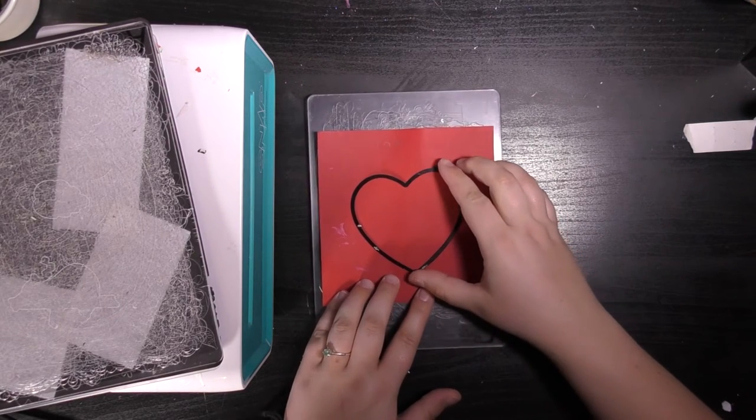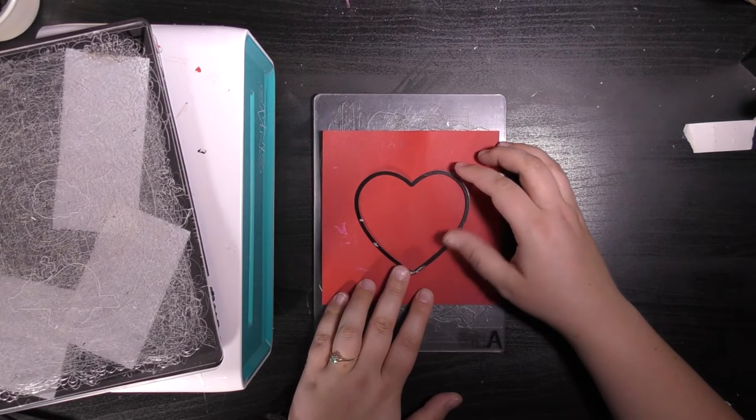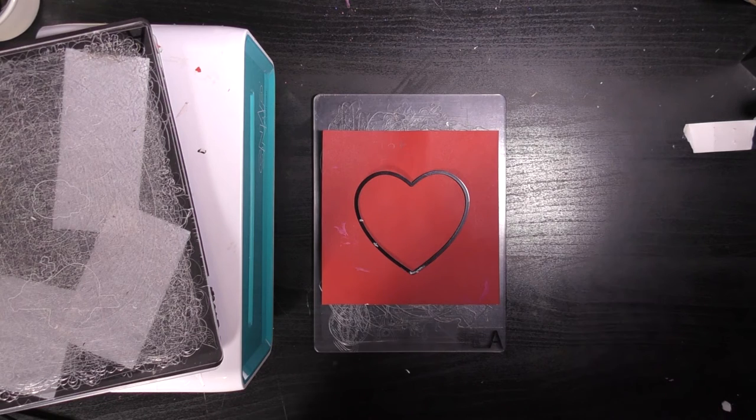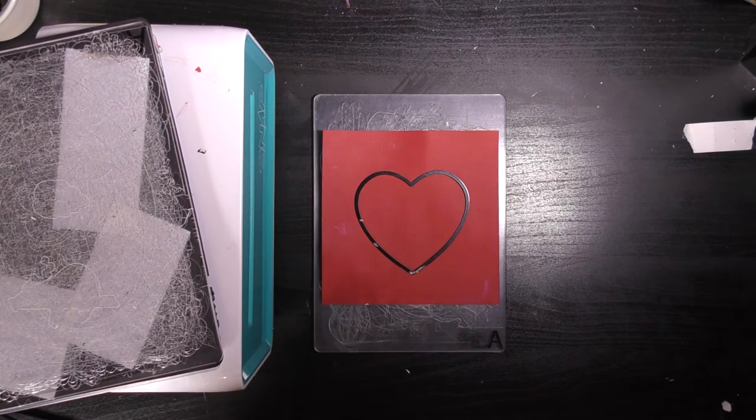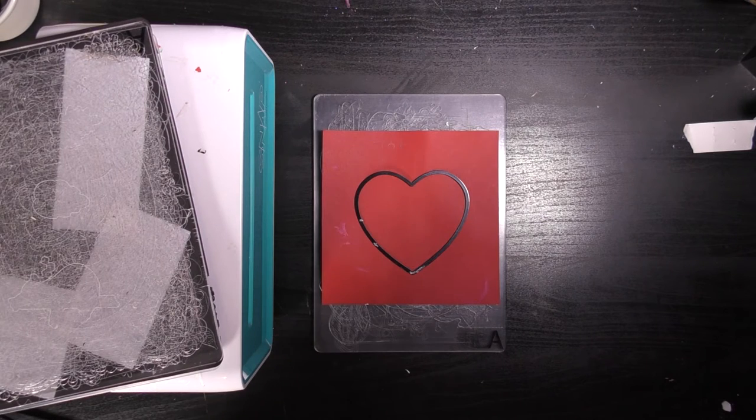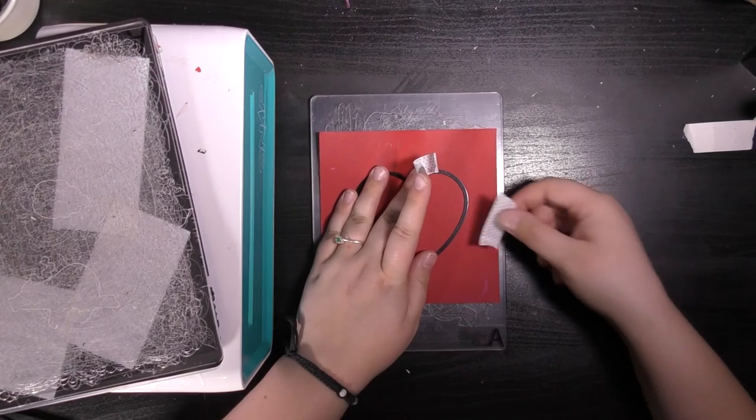Just place my die on my cutting platform and when I'm happy I'm going to stick down the die with some low tack tape or some washi tape to make sure it doesn't move while the plates are moving through my die cutting machine.